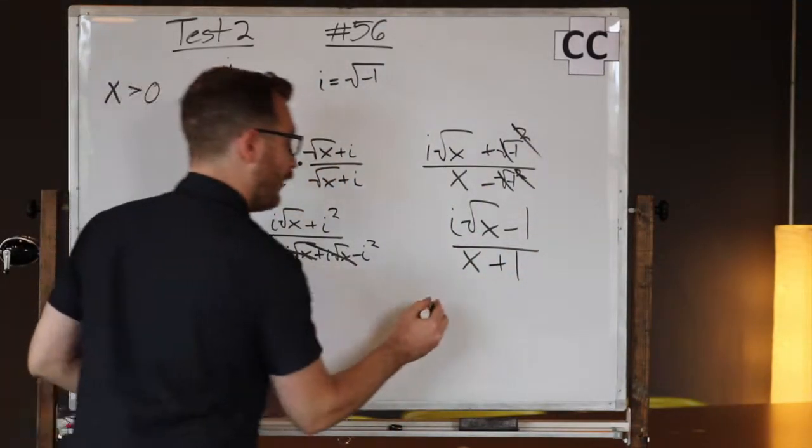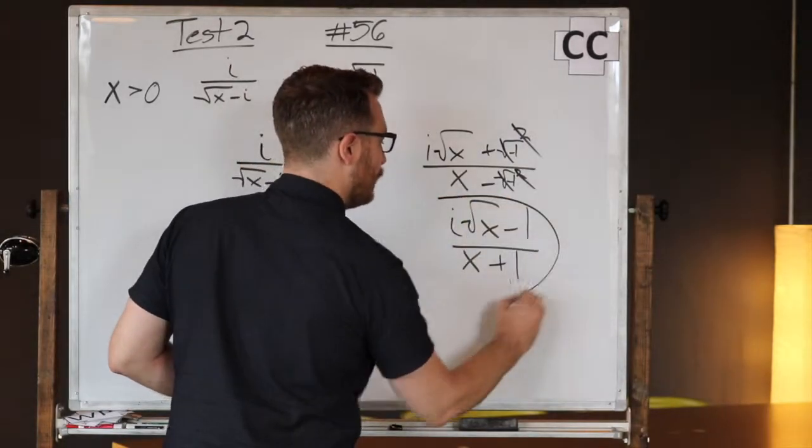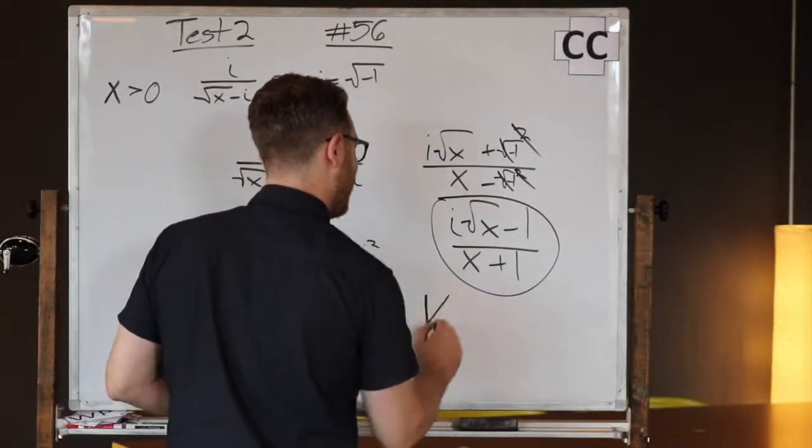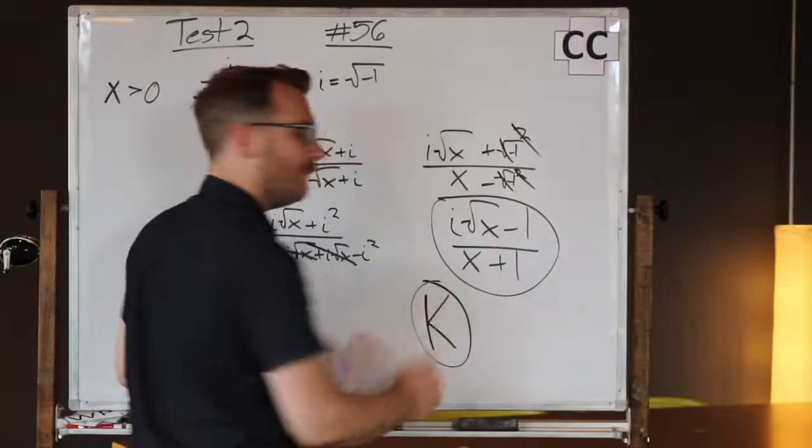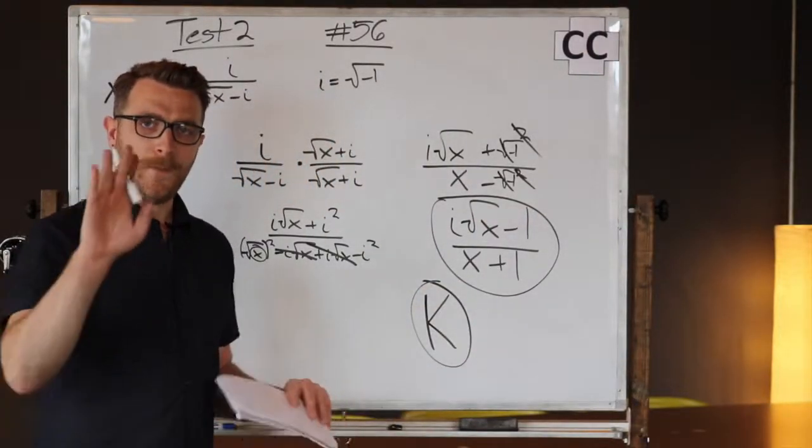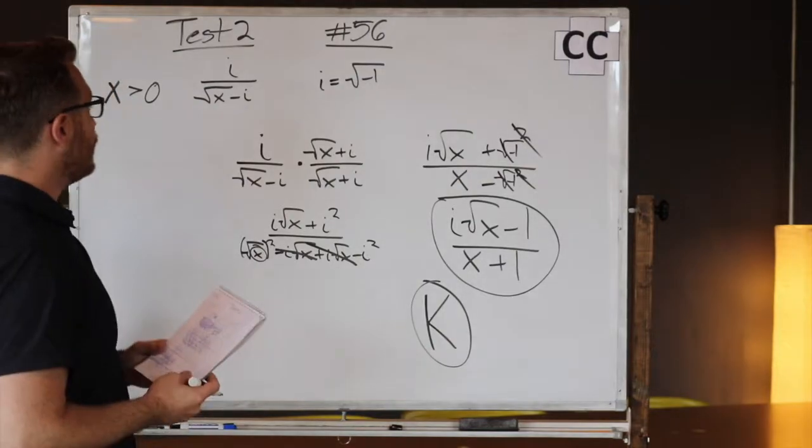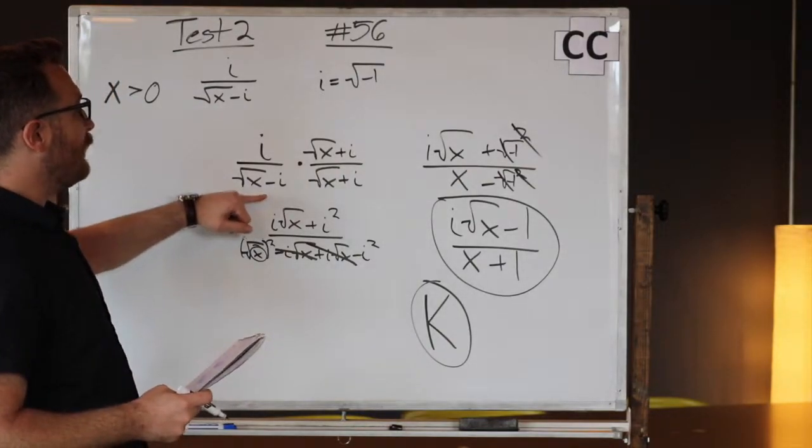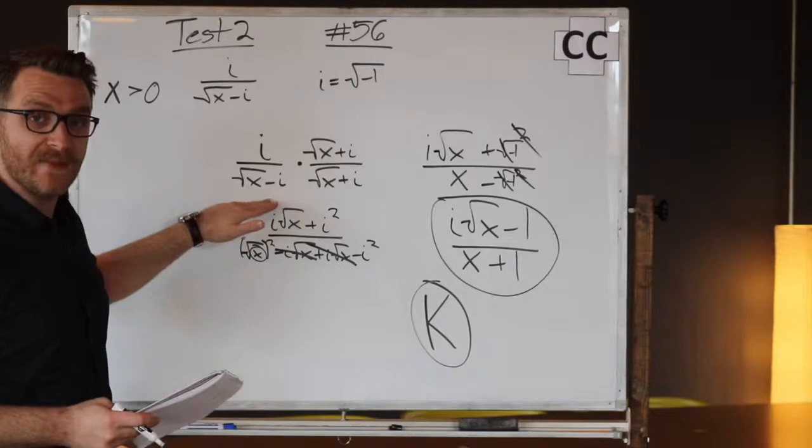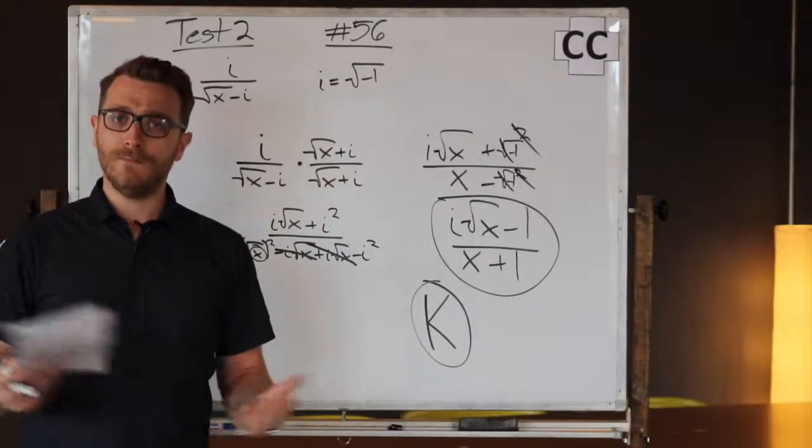And you will see from your letter answers, this simplification is the same as our letter choice K. Great job! You remembered all the properties of i. You used FOIL to delete the middle term to simplify things and got the right answer. Great job.